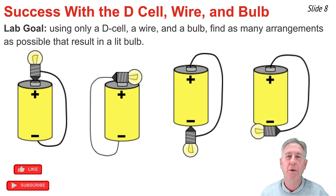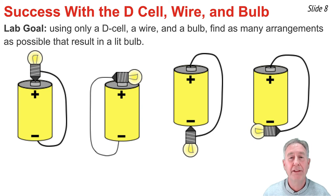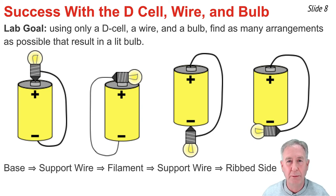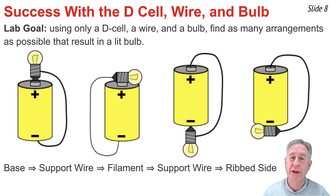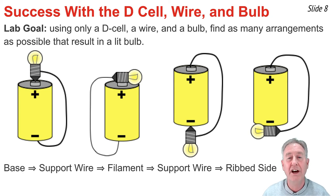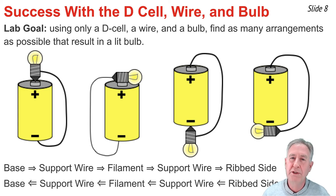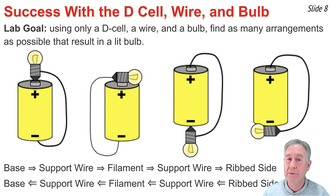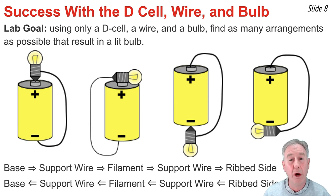These four arrangements of cell, wire, and bulb have one of two things in common. The first is that the base of the bulb is touching the terminal, and charge entering the base goes up through the support wire, across the filament, down the second support wire, and out the rib side of the bulb, where a wire touches the rib side on one end and the other terminal on the other end. The second possibility is that the rib side of the bulb is touching the terminal, and charge entering the rib side travels up through the support wire, across the filament, down the second support wire, and out the base, where a wire touches the base on one end and the other terminal on the other end.